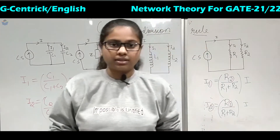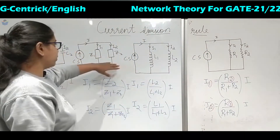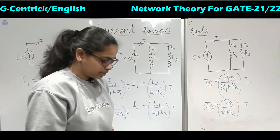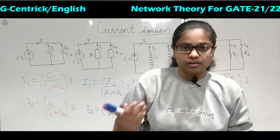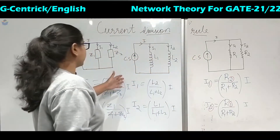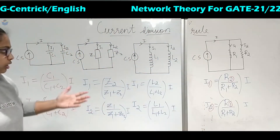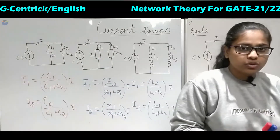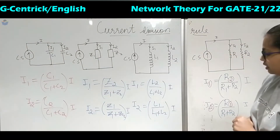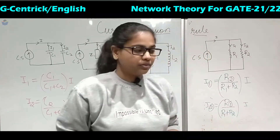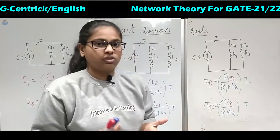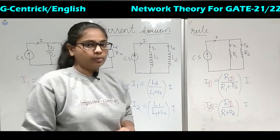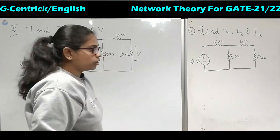Based on this, we will see some problems. Here we have only taken the current source; we have not mentioned whether it is AC or DC. When DC is applied to an inductor it behaves like a short circuit, and when DC is applied to a capacitor it behaves like an open circuit. We will see how it behaves with different sources and whether the value will be present when short circuited.